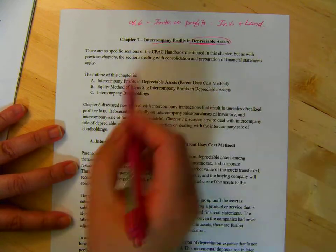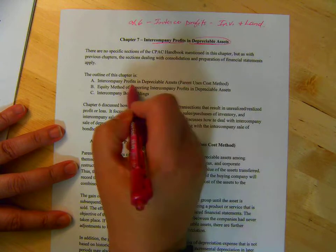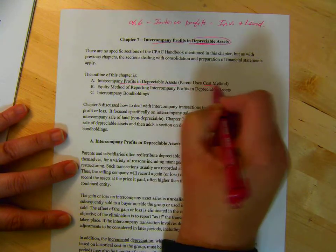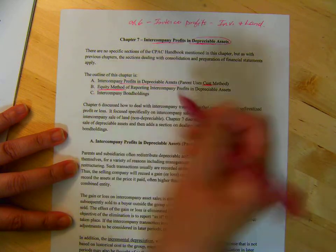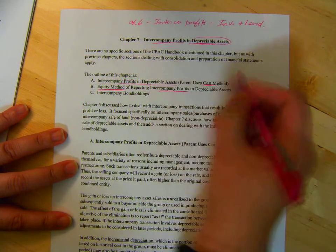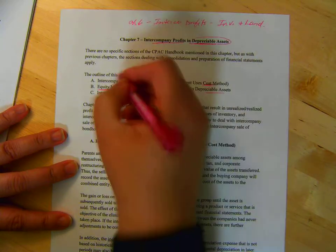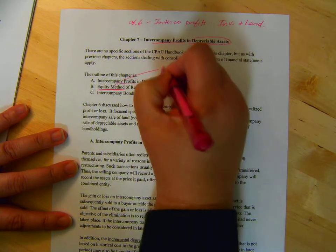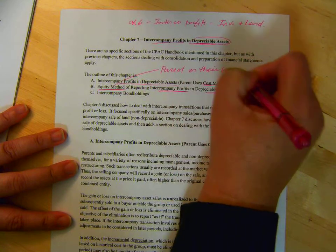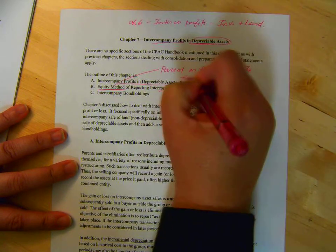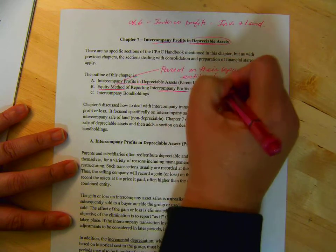Okay, so the outline of the chapter is intercompany profits in depreciable assets. Parent uses the cost method. Then we look at the equity method of reporting intercompany profits in depreciable assets. And remember the equity method is the parent on their separate entity books.